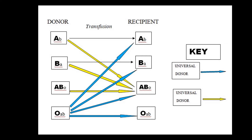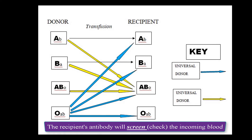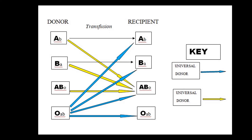The function of antibodies is to protect the blood from invasion by foreign antigens, or foreign bodies. For example, when blood is being transfused from the donor's circulatory system into the recipient's circulatory system, the antibodies of the recipient will check on that type of blood. We say the antibody will screen the incoming blood to check whether there is an antigen corresponding to it, and hence agglutination will take place.